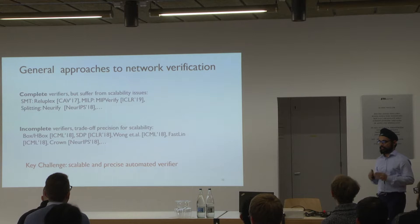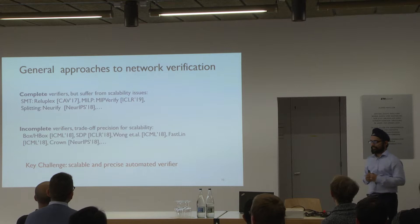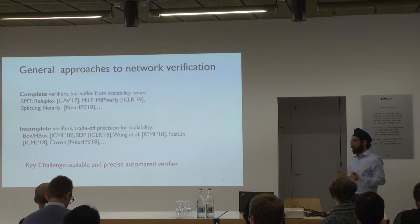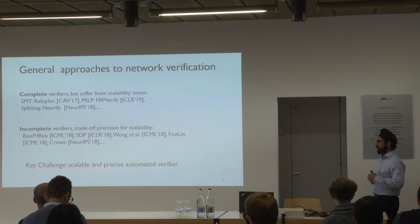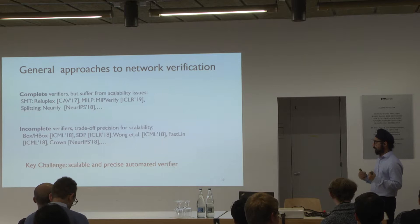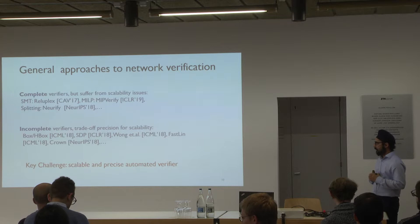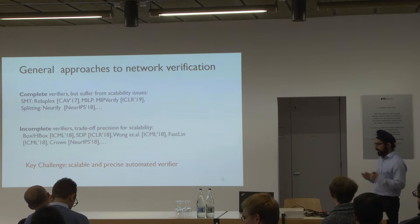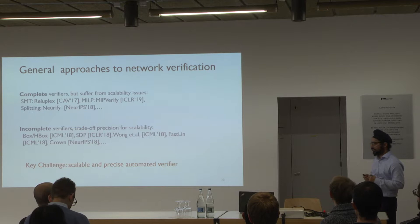We are not the first to do neural network verification. Verifiers can be broadly classified into two types. Complete verifiers give exact answers but are not very scalable — generally they will not scale for neural networks with tens of thousands of neurons, and are typically based on SMT solving, mixed integer linear programming, and input splitting. Incomplete verifiers trade off some precision to scale more. Some competing methods have similar precision, but I will try to convince you why ERAN is the way to go.